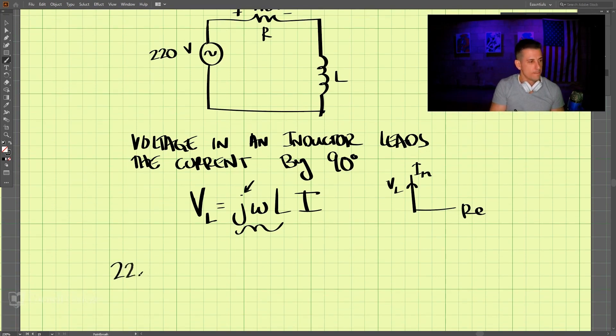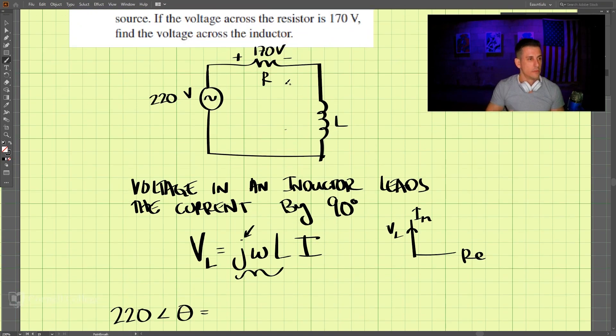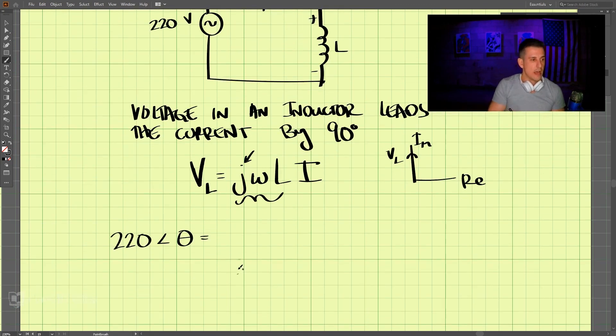We have 220 at some phase angle θ, which equals the voltage across the resistor plus the voltage across the inductor. The voltage across the inductor will be in the j direction.